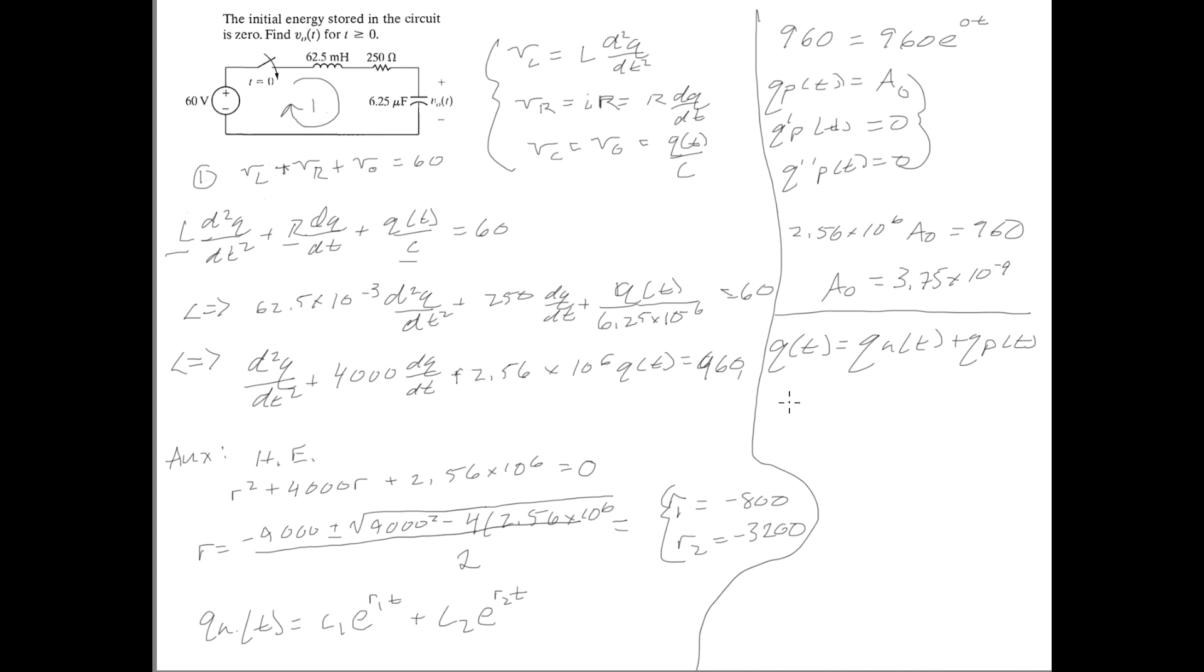Essentially, it's the same thing you're doing in your differential equations class. So we have C1 e^(-800T) plus C2 e^(-3200T) plus, now we just have our particular solution, 3.75 times 10^-4.